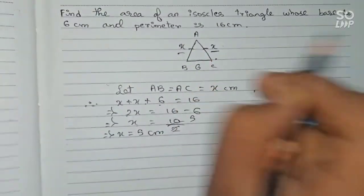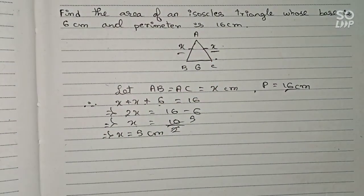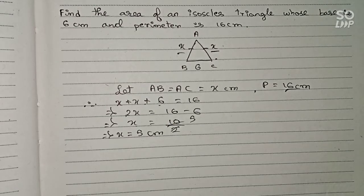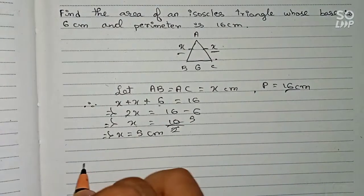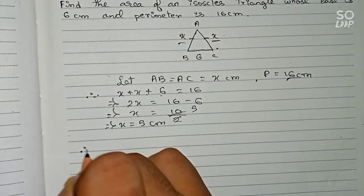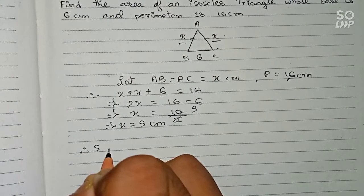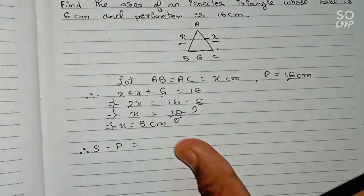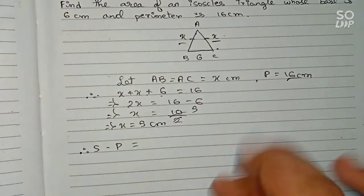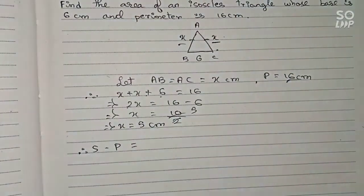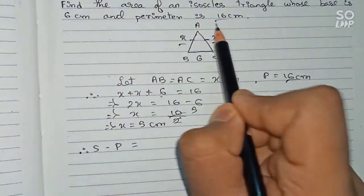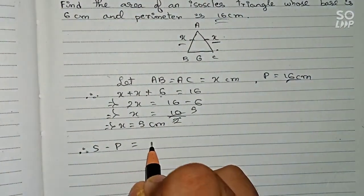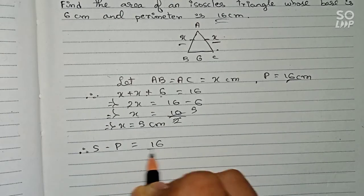So both equal sides are 5 centimeters each, and the base is 6 centimeters. Now we have all three sides and can find the area. First we find the semi-perimeter: s equals the sum of all three sides divided by 2. The perimeter is already given as 16, so s equals 16 divided by 2, which equals 8 centimeters.